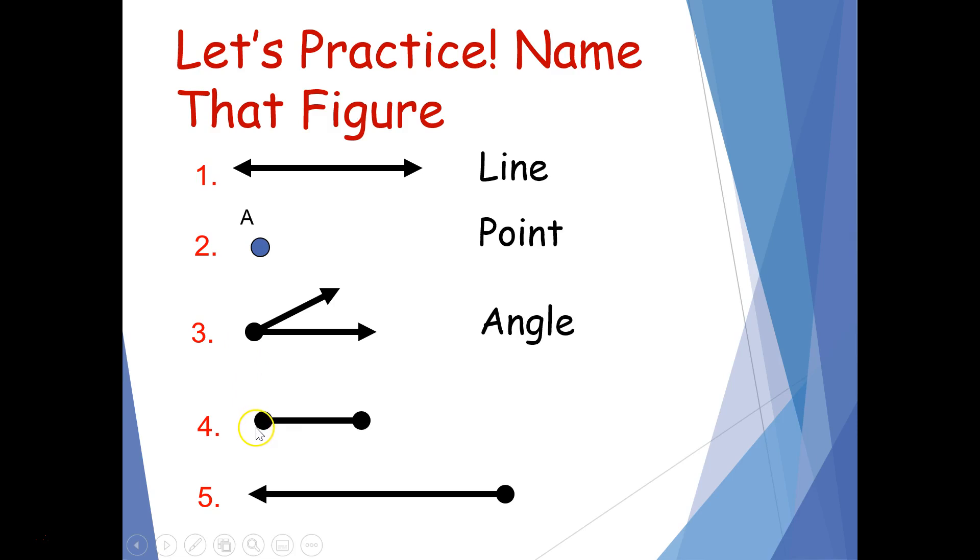Number four, it looks like a line, but instead of arrows, it has two points to show a definite start and stop place. That means it's going to be a line segment, which is part of a line. And finally, I see that there's an endpoint here and it keeps going and going and going. It has no stop because there's an arrow on this side. That means it's going to be a ray. You got all five right? Give yourselves a round of applause. You did a great job.